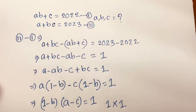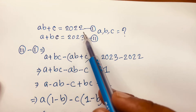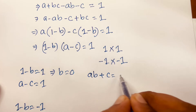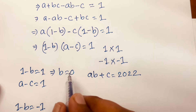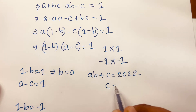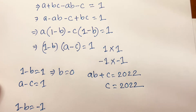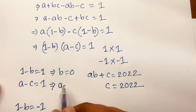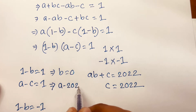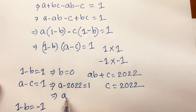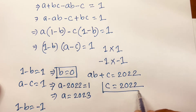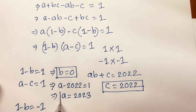In case one, B is equal to 0. Remember our first equation is A^(B+C) equal to 2022. Substituting B equals 0, we get A^C equals 2022, so C equals 2022. And since A minus C equals 1, we get A equals 2023. So in case one: B equals 0, C equals 2022, and A equals 2023.